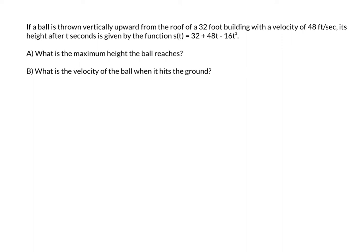If a ball is thrown vertically upward from the roof of a 32-foot building with a velocity of 48 feet per second, its height after t seconds is given by the function s(t) = 32 + 48t - 16t². For part A, we want to find the maximum height that the ball reaches, and part B wants the velocity when the ball hits the ground.